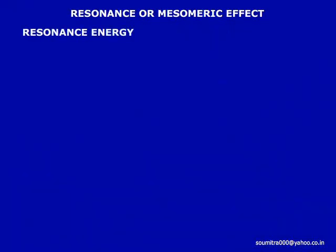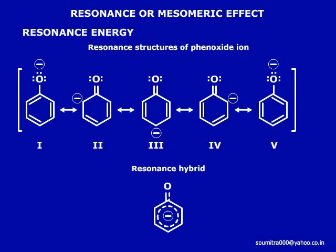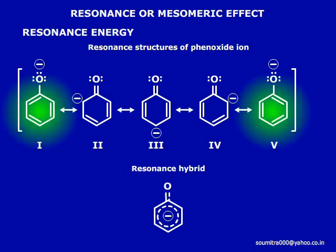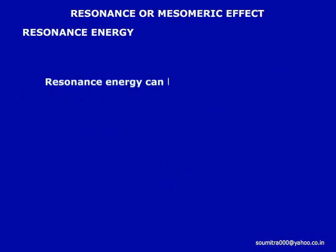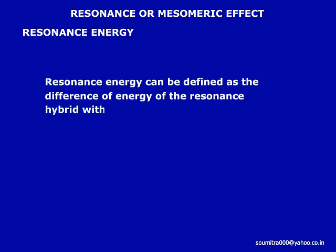Resonance energy. Out of the five structures of phenoxide ion, structure one and five are the major contributors and have the minimum energy. The difference in energy of this structure and the resonance hybrid is equal to the resonance energy of phenoxide ion. Therefore, resonance energy can be defined as the difference in energy of the resonance hybrid with the most stable canonical form.